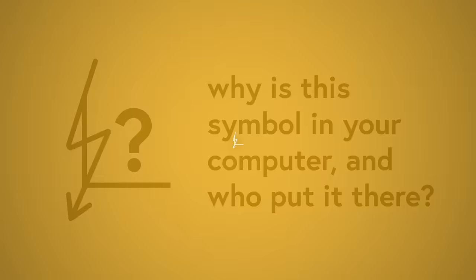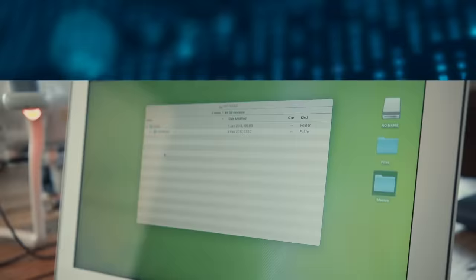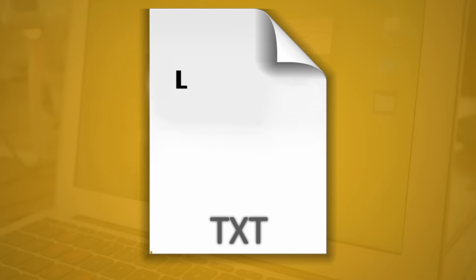Before we talk about how this character probably ended up in Unicode, I need to explain how Unicode works in the first place. Let's say you've just opened a text file on your computer—for the sake of simplicity, let's say it's the Half as Interesting script I need to finish, which currently just contains the letter L. That file doesn't actually contain the L itself—the arrangement of pixels you see on screen. That would make text files way bigger than they need to be.